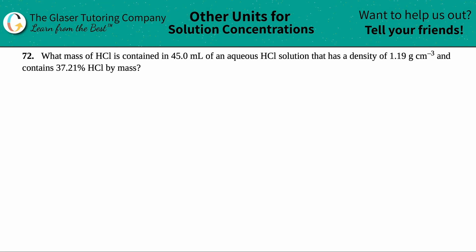Number 72. What mass of HCl is contained in 45.0 mL of an aqueous HCl solution that has a density of 1.19 grams per centimeters cubed and contains 37.21% HCl by mass?